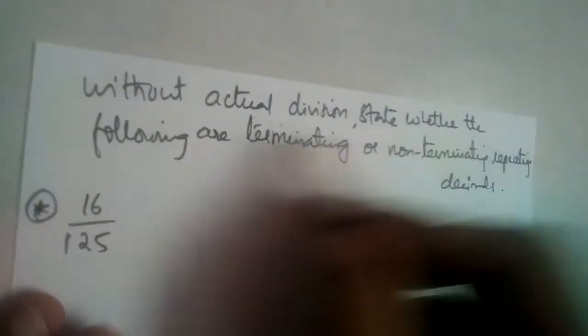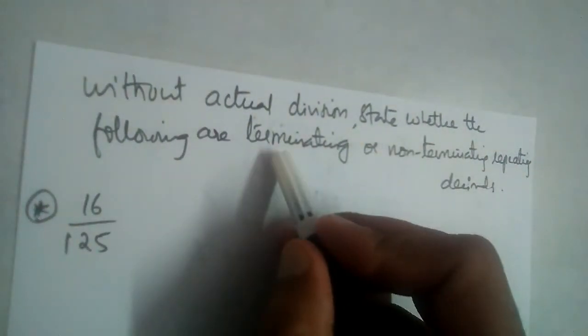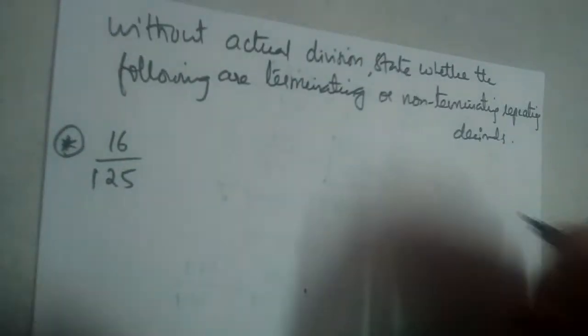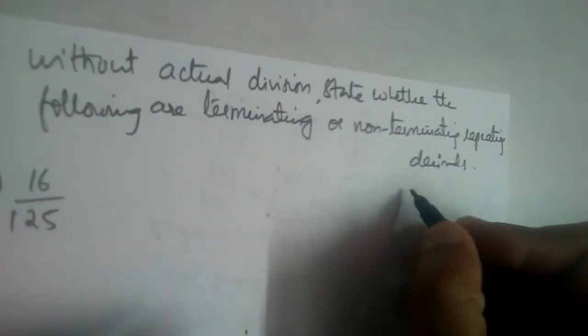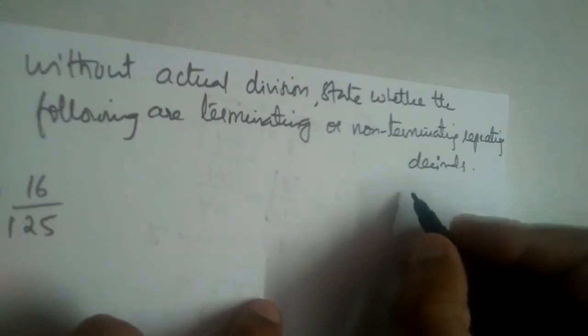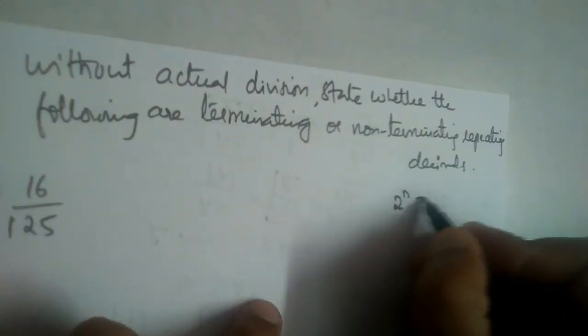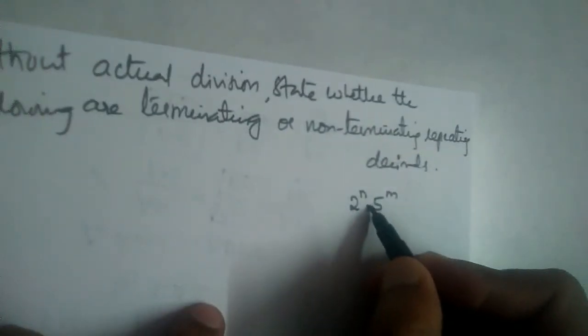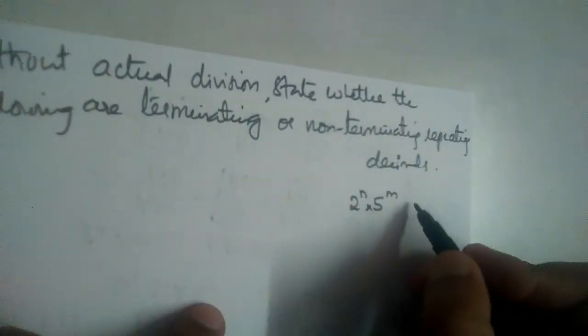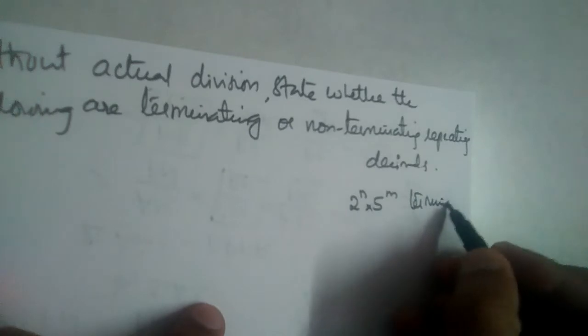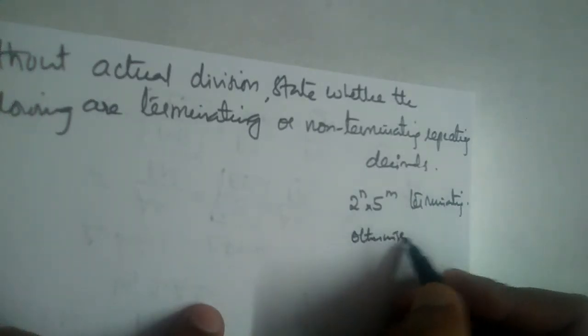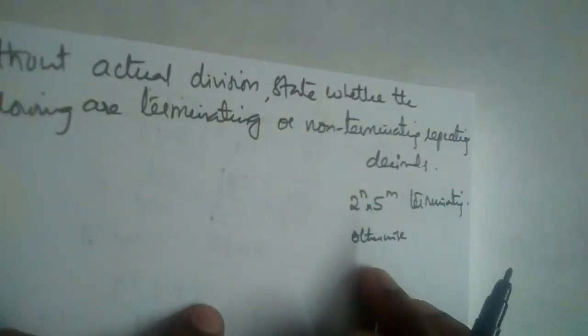Without actual division, state whether the following are terminating or non-terminating repeating decimals. We have learned in the previous two videos that if in the denominator the prime factors are of the form 2 power n, 5 power m, then it will be terminating. Otherwise, non-terminating repeating decimals.